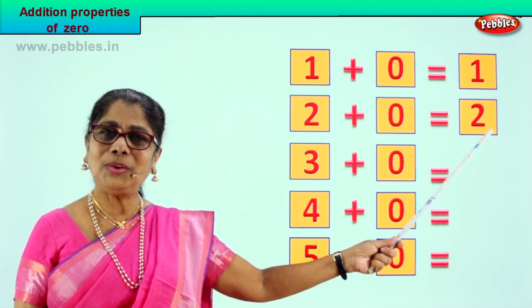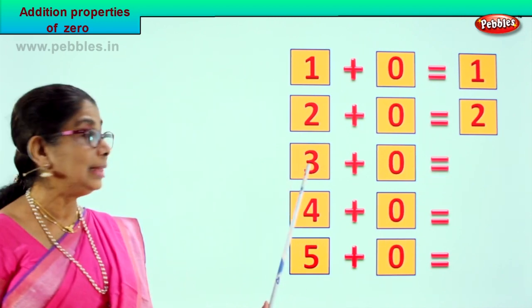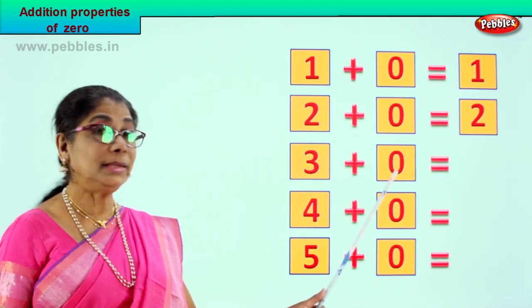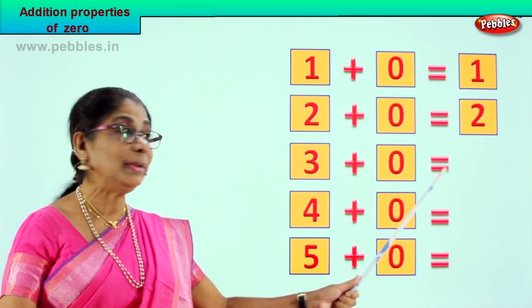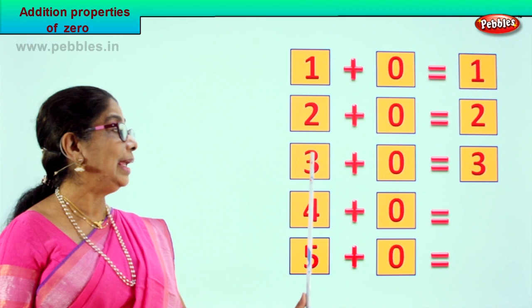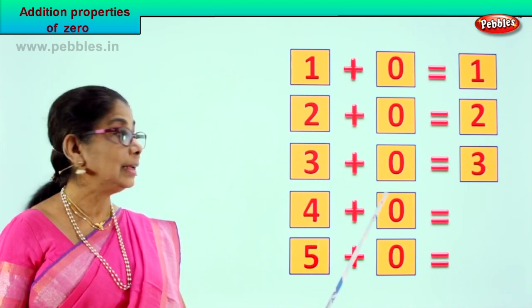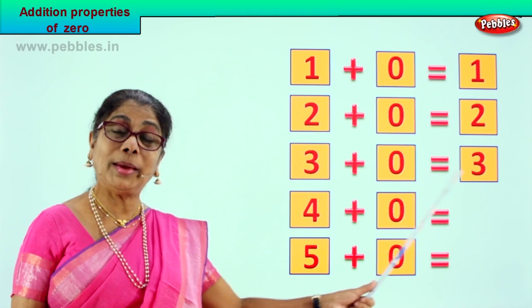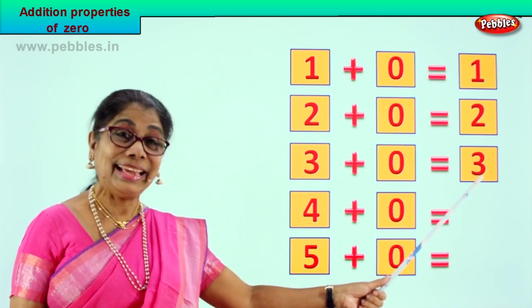Did you enjoy? Look at the third one. Observe. Three plus zero is equal to the same number three. Read it again: three plus zero is equal to three. Good.